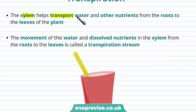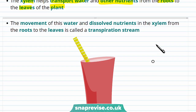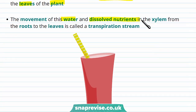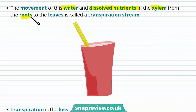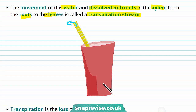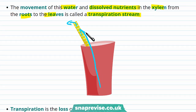The xylem transports water and other nutrients from the roots to the leaves of the plant. The movement of this water and dissolved nutrients in the xylem from the roots to the leaves is called a transpiration stream. You can think of this a little bit like drinking through a straw — as you drink from the top, water gets poured in from the drink to keep the stream going.